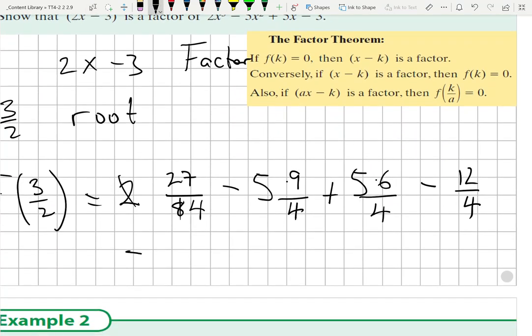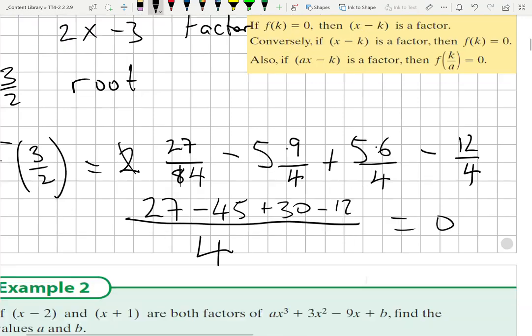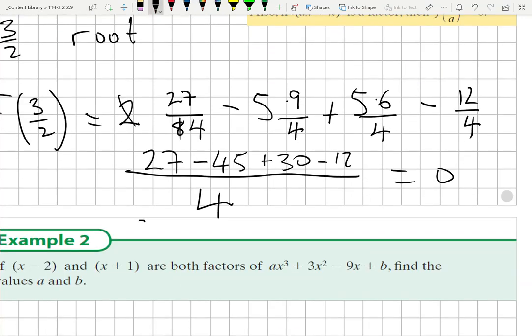Tidying up a little bit, I have 27 minus 45 plus 30 minus 12 equals 0. And indeed, 57 minus 57 over 4 equals 0, and that's you finished.